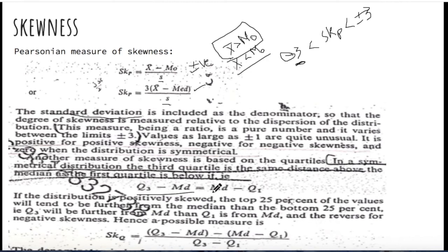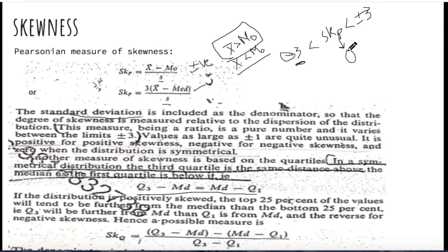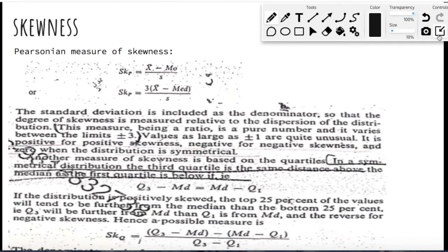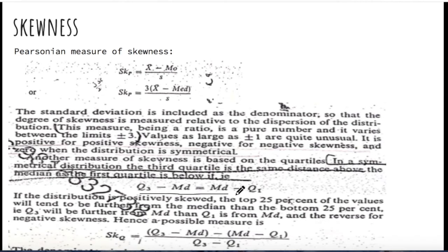The second kind of measure is the quartile measure of skewness. Before we discuss it, note that if your data has no skewness, the Pearsonian measure will be zero — because when data is symmetrical, mean equals mode so the numerator becomes zero. Now, in a symmetrical distribution, a specific relationship holds regarding quartiles.